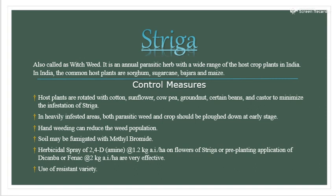Control measures of Striga: host plants are rotated with cotton, sunflower, cowpea, groundnuts, certain beans, and castor to minimize infestation. In heavily infested areas, both parasitic weeds and crops should be plucked out at an early stage. Hand-weeding can reduce the weed population. Soil may be fumigated with methyl bromide. Herbicidal spray of 2,4-D amine at 1.2 kg active ingredients per hectare on flowers of Striga, and pre-planting application of Dicamba at 2 kg active ingredients per hectare are very effective.